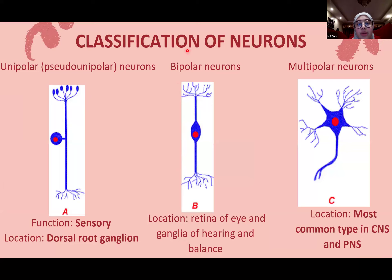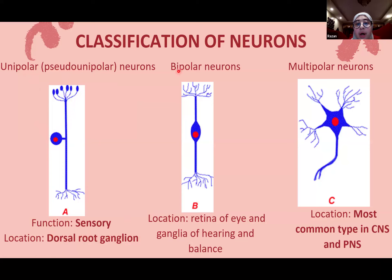There are three types of neurons. Pseudo-unipolar neurons — very important — have a sensory function and are located in the dorsal root ganglia. They're called pseudo-unipolar because the cell body gives one axon that divides into two branches. Bipolar neurons are found in the eye and the ganglion of hearing and balance, but are rarely tested. Multipolar neurons are the most common type in both the CNS and PNS.